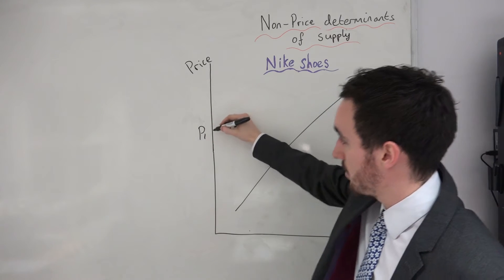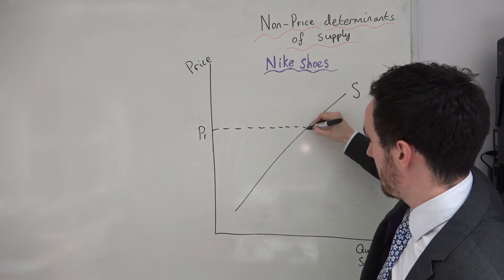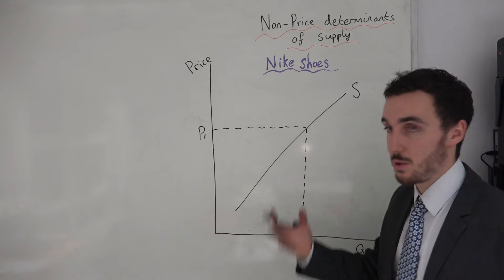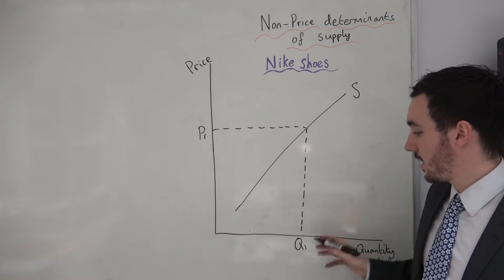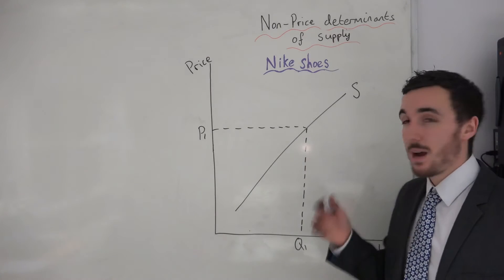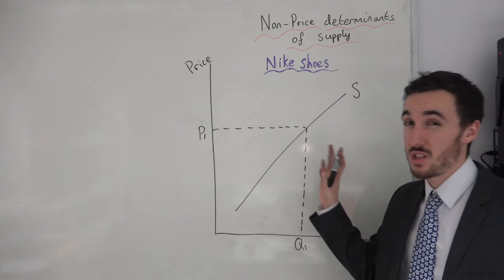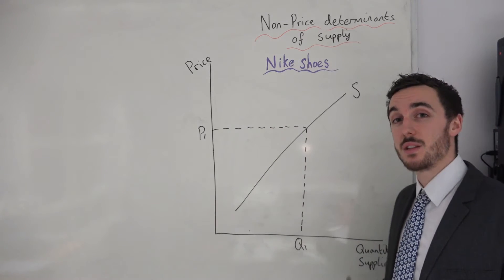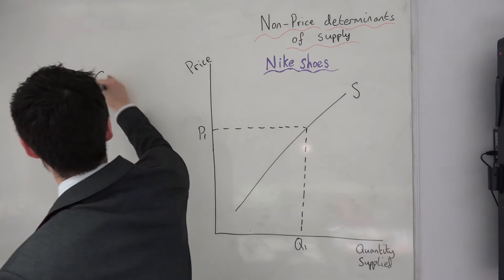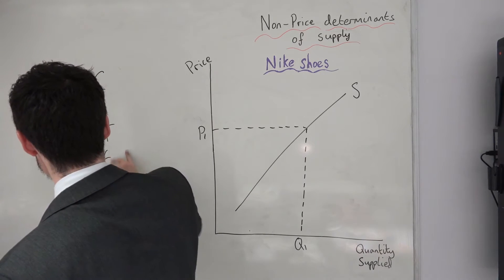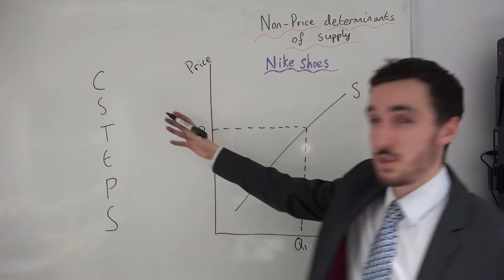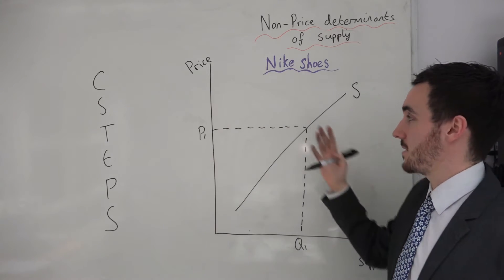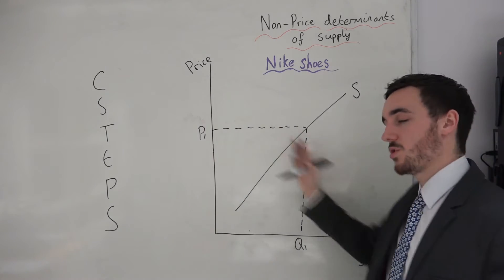So at this price level, for example at P1, we can see that producers are willing and able to supply a quantity of Q1. So now we need to see what determinants might actually shift the supply curve inwards and outwards. The factors I like to use in an exam are C-STEPS. Let's go through those quickly and then we'll see how they relate to the supply curve and how they might shift it inwards or outwards.